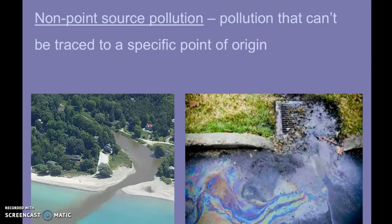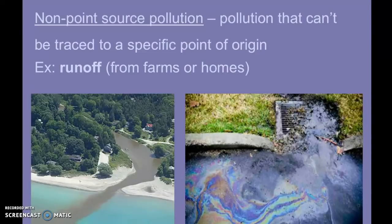Non-point source pollution is the other category, and it's pollution that you can't tell where it's coming from — it cannot be traced back to a specific source. It's an unidentified area, and in some cases could be multiple sources. The biggest example is runoff. If you have a question on your EOG about non-point source pollution, the answer is probably going to be runoff — from farms (agricultural), homes (residential), or urban areas with cities and buildings.